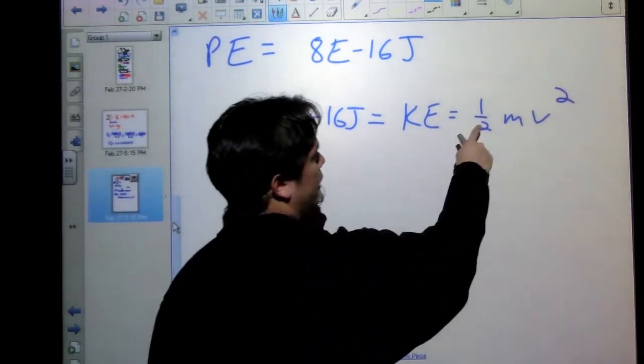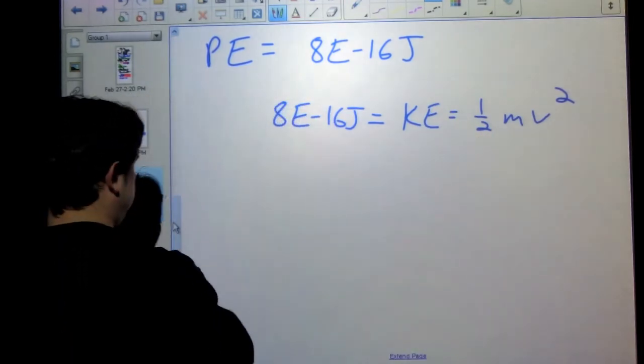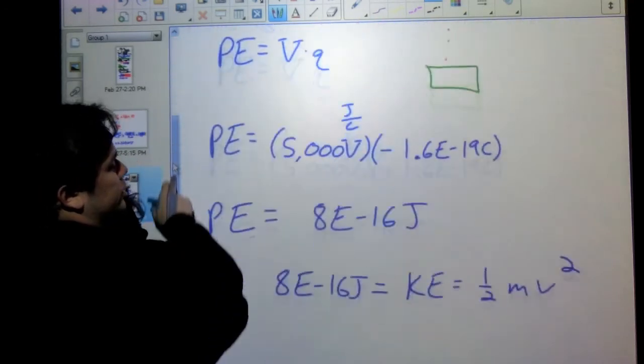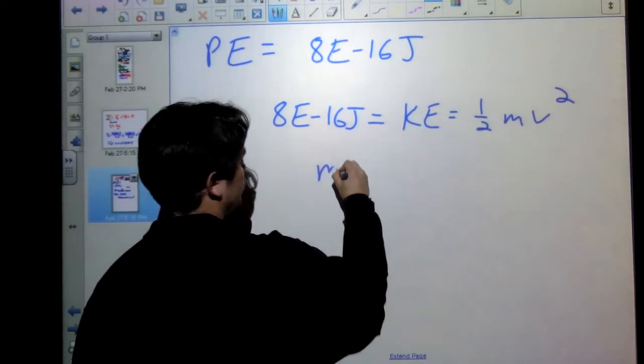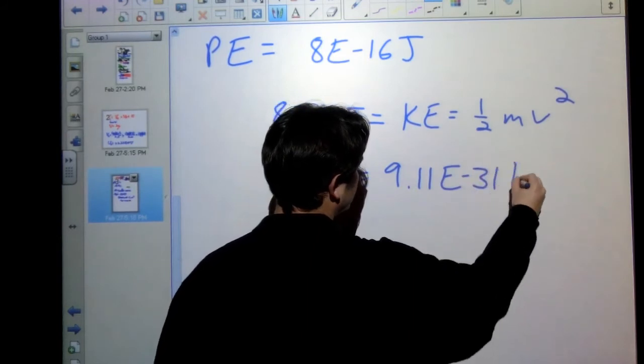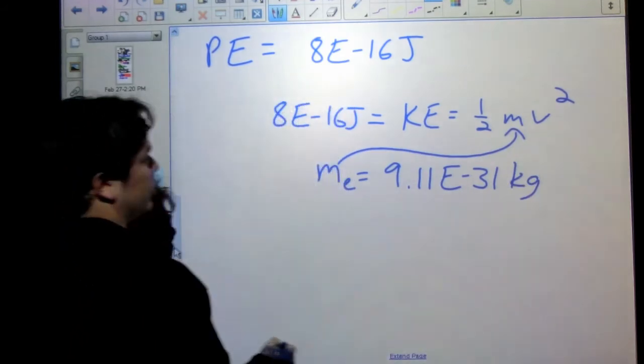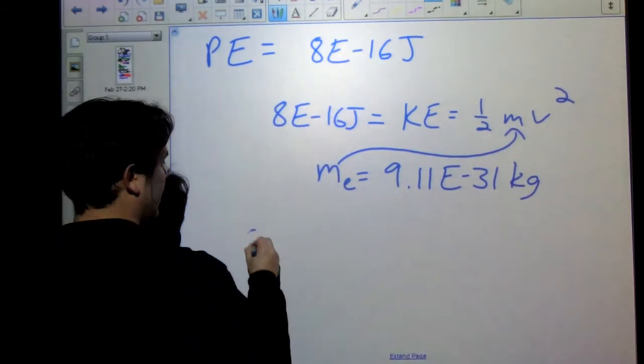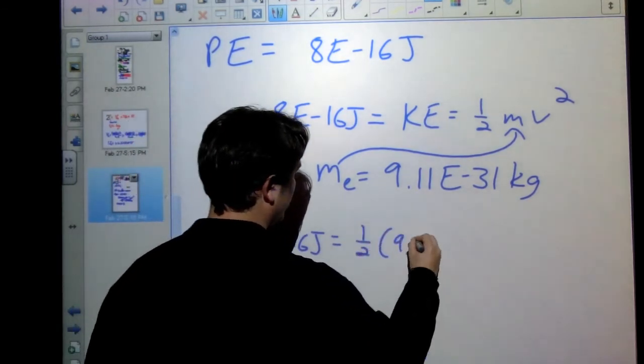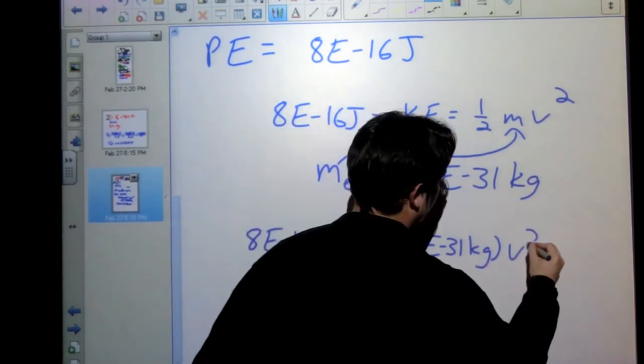All right. Well, okay, so I know the energy. I know one half. I want to find my velocity. I need my mass. What object are we dealing with again? Well, it's an electron microscope, so we're dealing with electrons. So our mass of the electron is equal to 9.11 times 10 to the negative 31st kilograms. So if I plug that in here, because that's the particle that I'm looking at, I'll find that 8 times 10 to the negative 16th joules equals one half times 9.11 times 10 to the negative 31st kilograms, times our velocity squared.